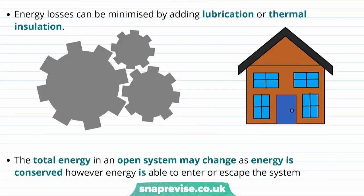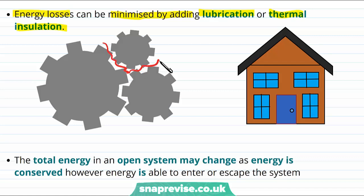It turns out that not all the energy we put into a system ends up going towards doing the thing we intended it to do. But these energy losses can be minimized by, for example, adding lubrication or thermal insulation. When cogs rub against each other there might be friction or heat, which is an unwanted loss of energy, and a way to work against this is to lubricate the cogs so that they slide past each other easily and less heat is produced. With something like a house, we might aim to heat the house, but some of the heat leaks back outside, and a way to work against this is to firmly insulate the house so that less heat can escape.